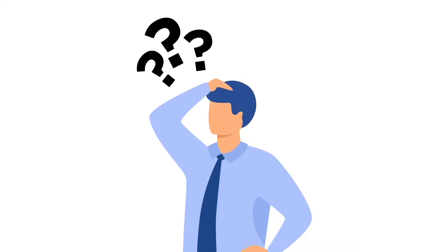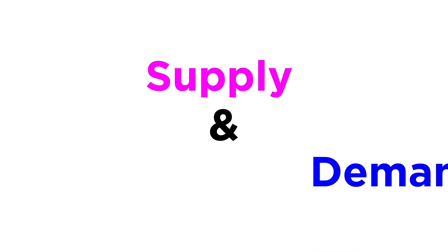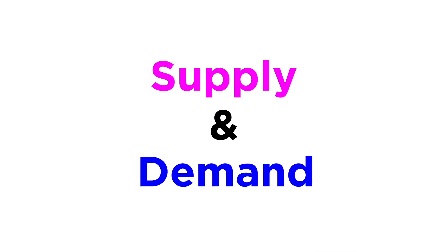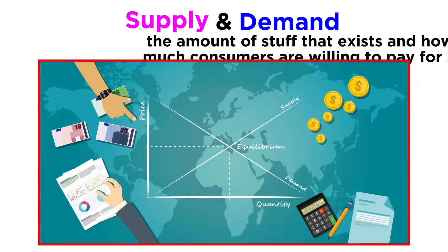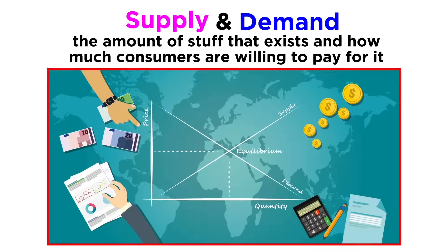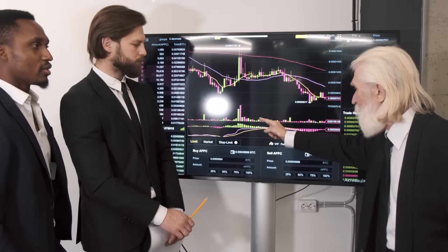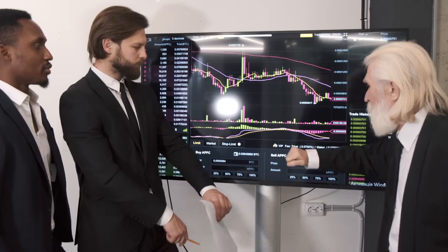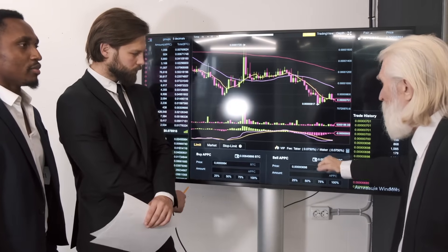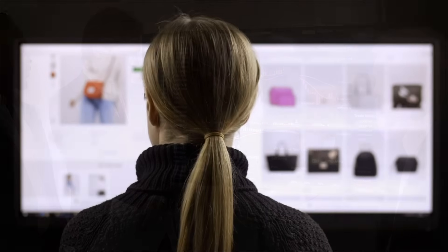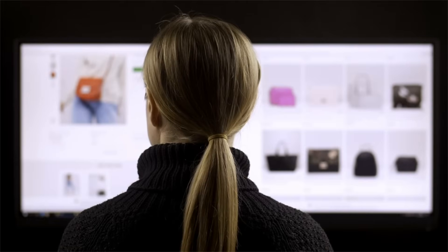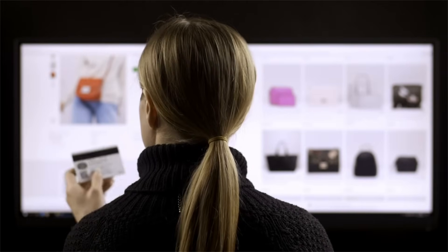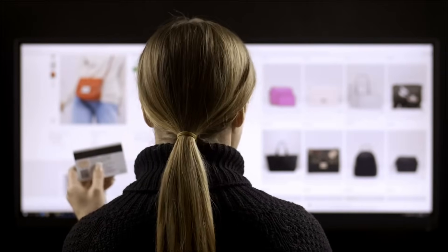The answer to this question is supply and demand. These words refer to the amount of stuff that exists, and how much consumers are willing to pay for it. By analyzing how the cost of something affects how much people are willing to buy it, one can become able to predict how consumers will react to a change in price.